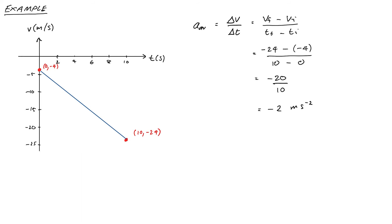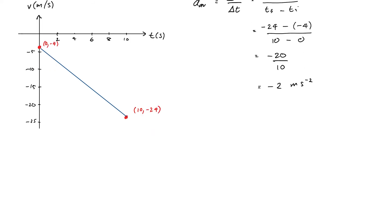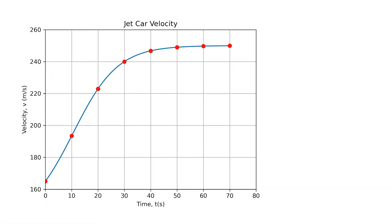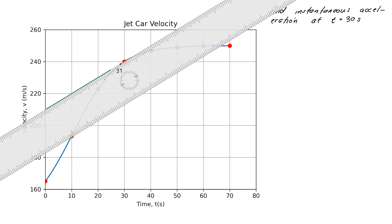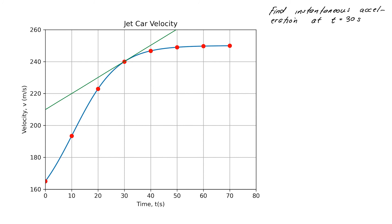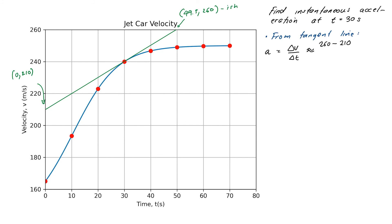Now a slightly trickier situation with changing acceleration. Here's a velocity versus time graph of a jet car, and we want to know its acceleration at 30 seconds. We draw a tangent line, make it as large as possible for accuracy, and estimate instantaneous acceleration via rise over run. Acceleration = ΔV/ΔT = (260 − 210) / (49.5 − 0) ≈ 1.01 m/s².